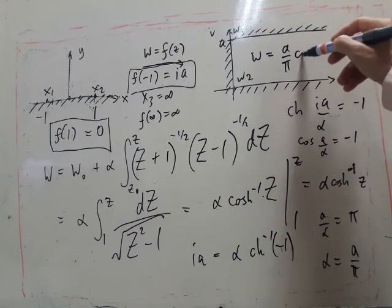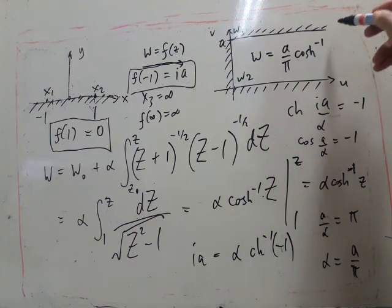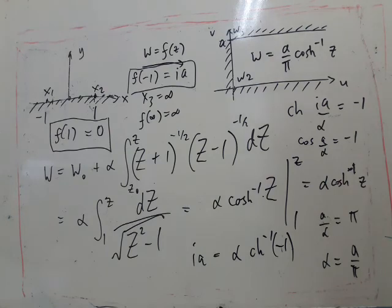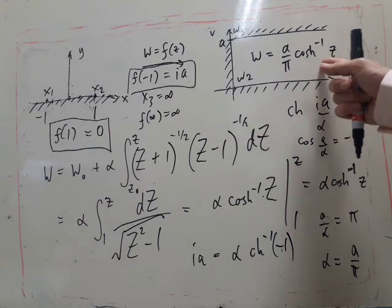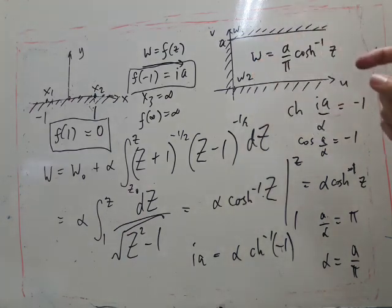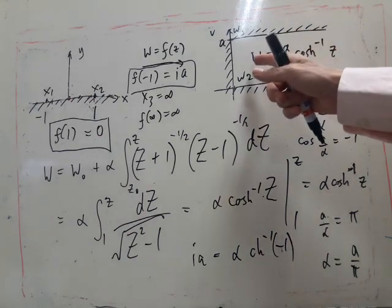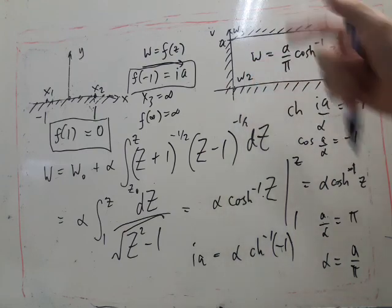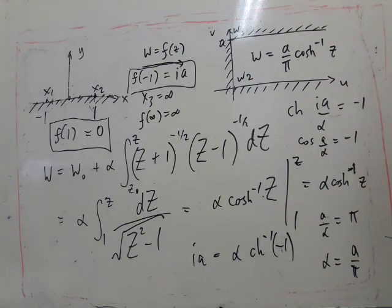Notice if we do the inverse transformation we get z equals cosh pi w over a, which is familiar from something we've done earlier.